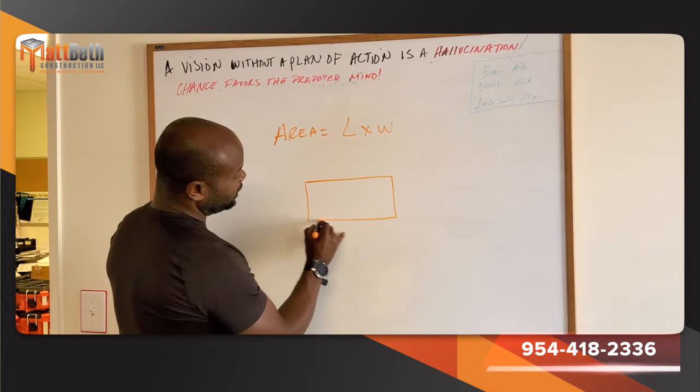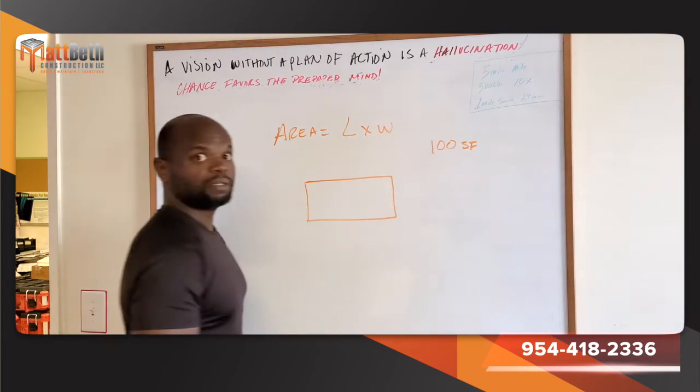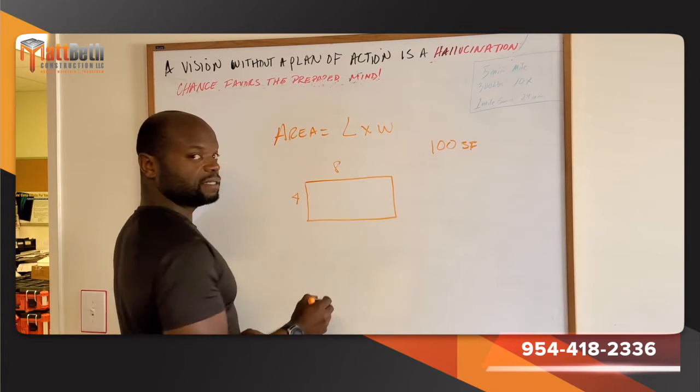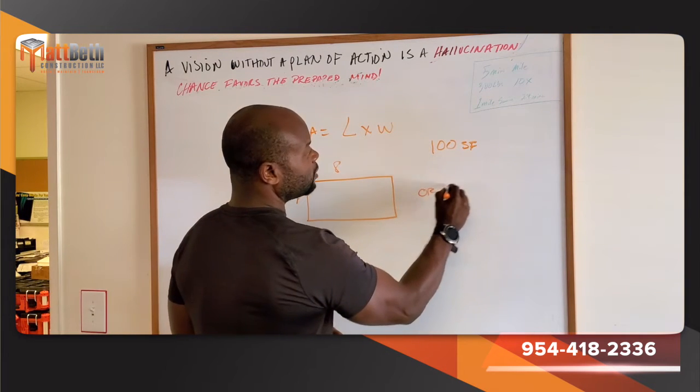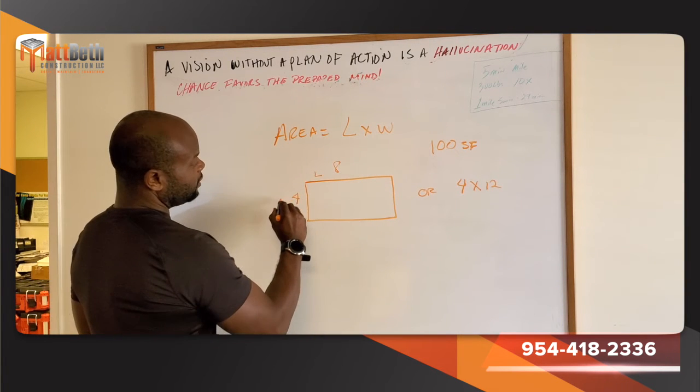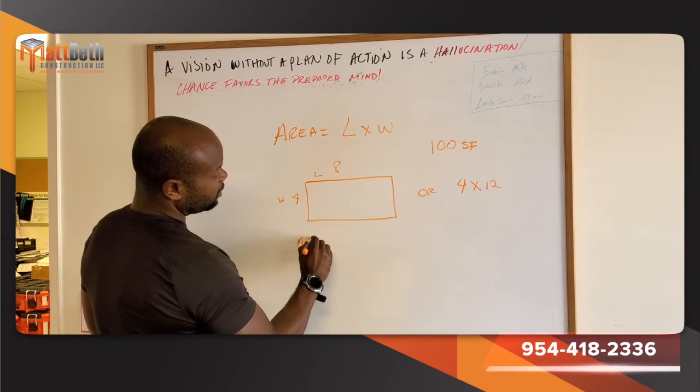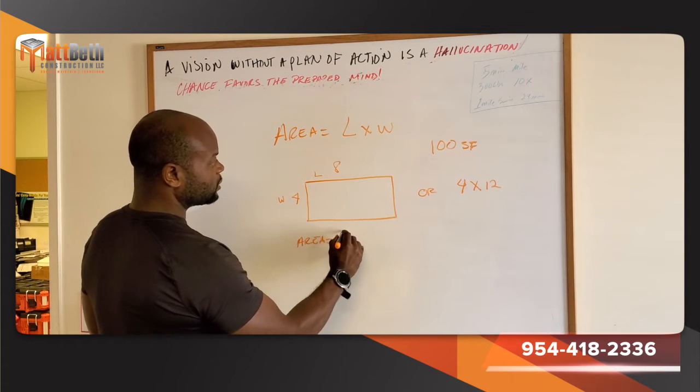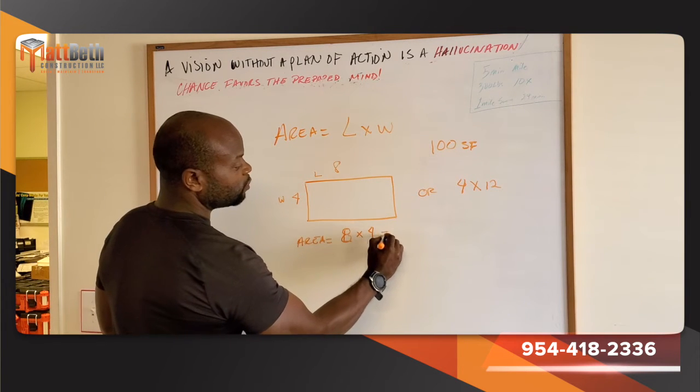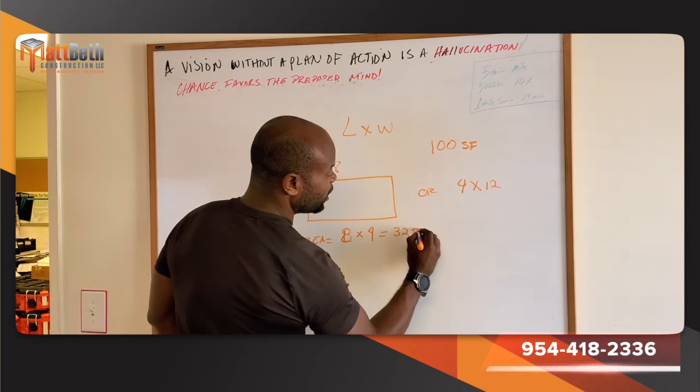And we tell you you need 100 square feet of drywall, this drywall typically is 4 by 8 or 4 by 12. This is the length, this is the width. Plug that in there. Area equals length, which is 8, times 4, which equals 32. Now, the number you put after that is square feet.